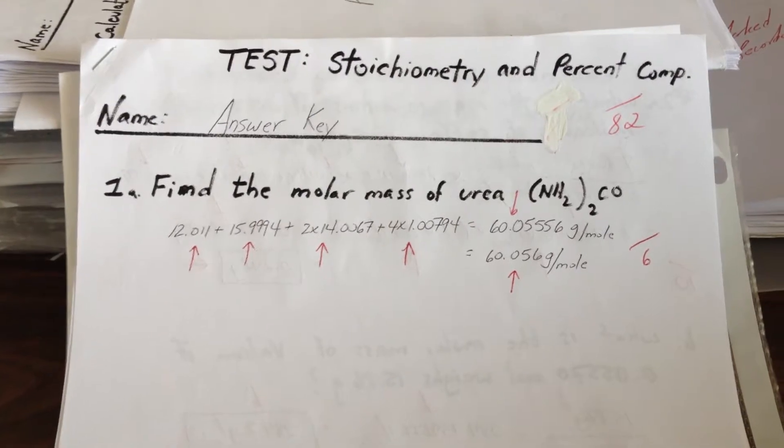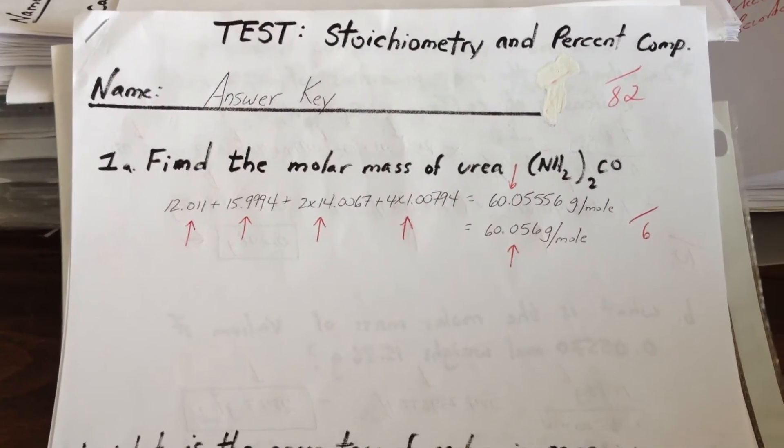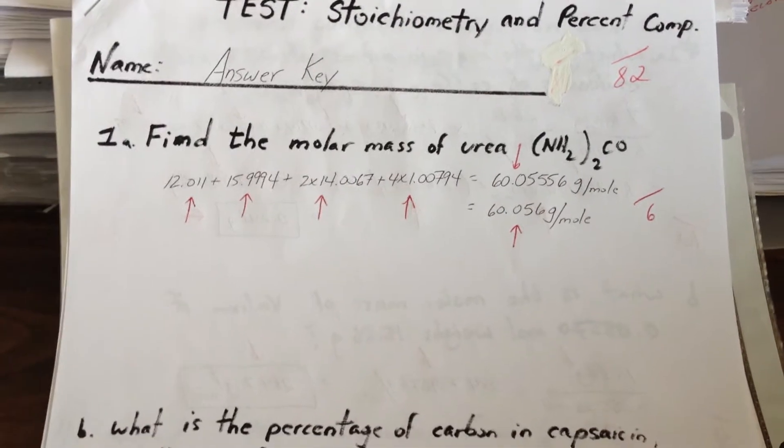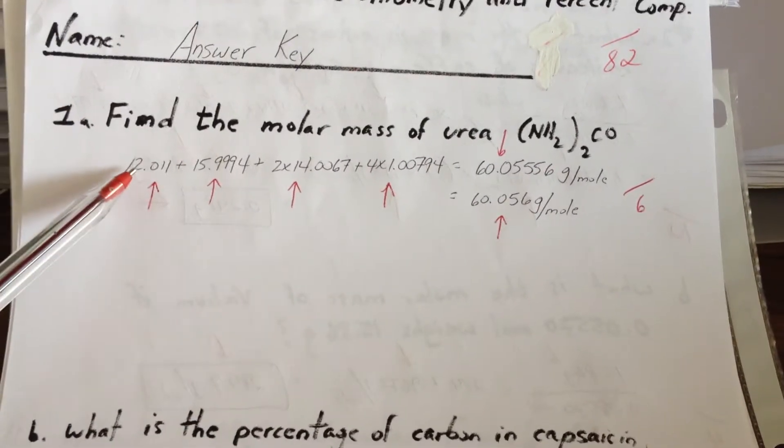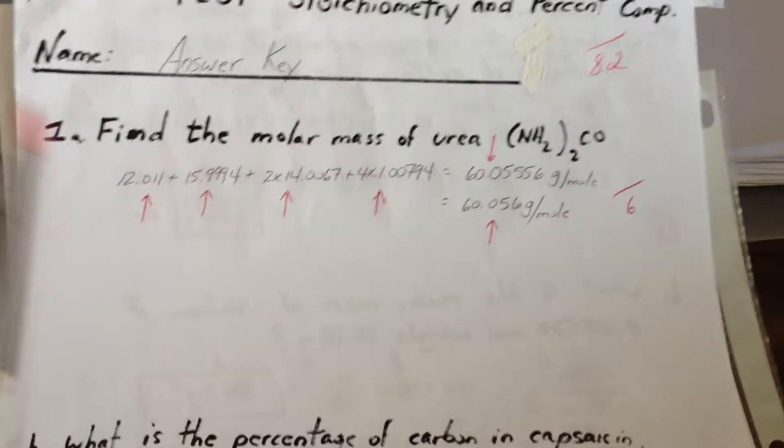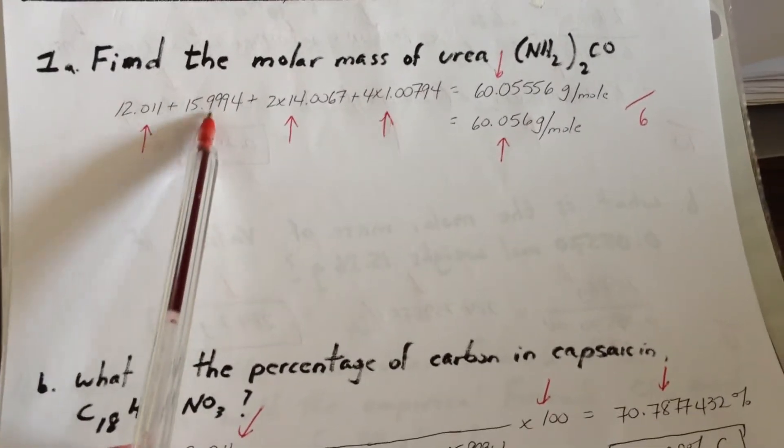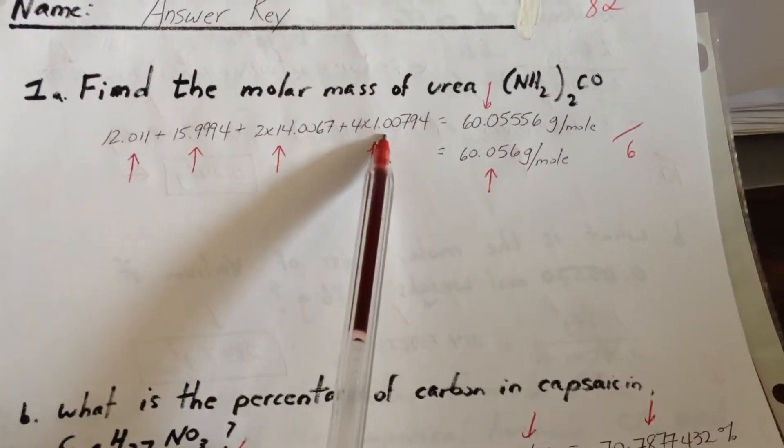find the molar mass of urea, which has a formula NH2 taken twice with a carbonyl group in between. It's a very simple question to calculate the molar mass. You add the individual molar masses of each one of the elements that compose the molecule. So once for carbon, once for oxygen, two times for nitrogen, four times for hydrogen.